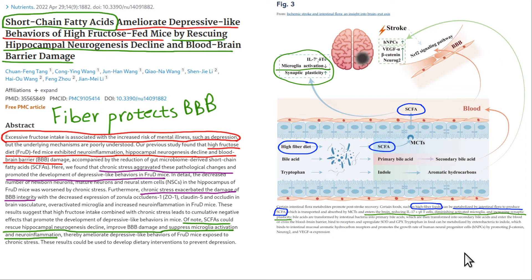The blood-brain barrier gets a protective effect from dietary fiber and specifically from the dietary fiber conversion into short-chain fatty acids, which are used to maintain the tight junctions of both the gut lining and of the blood-brain barrier.